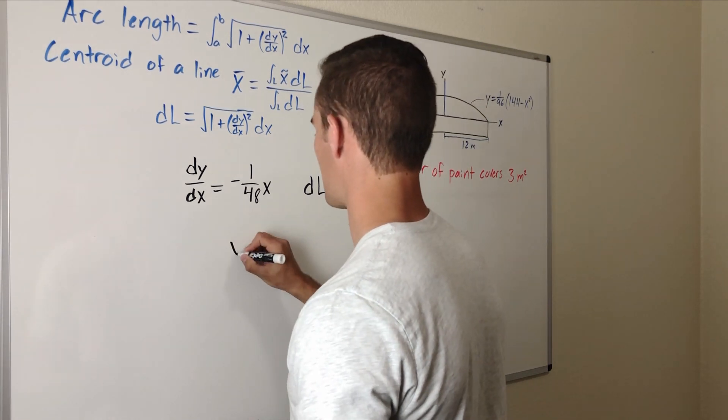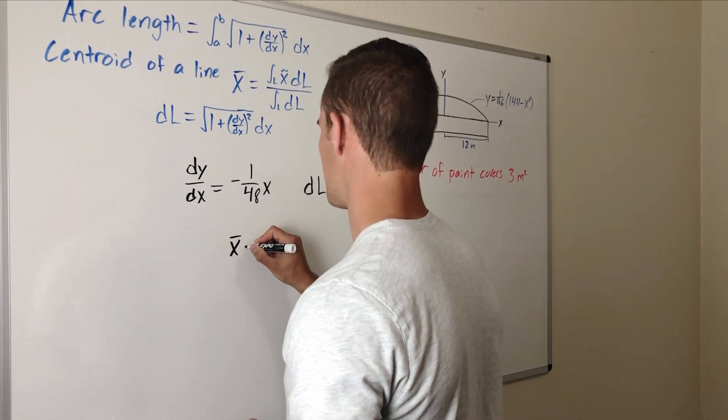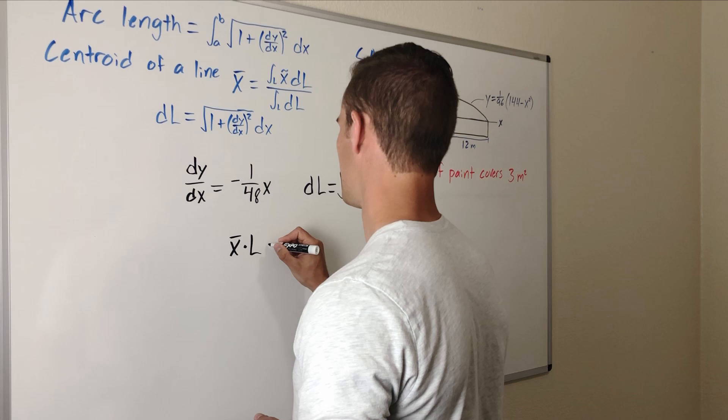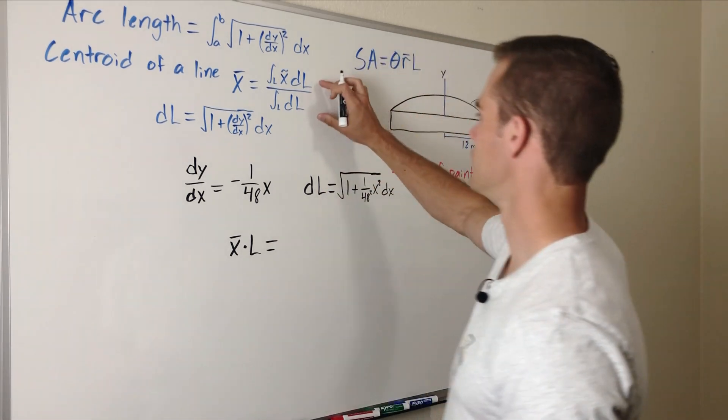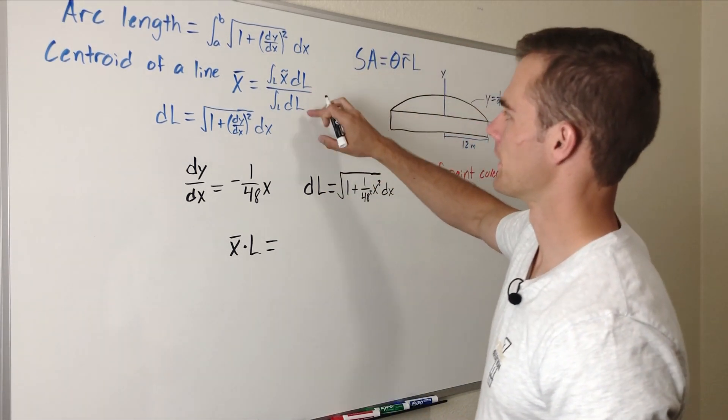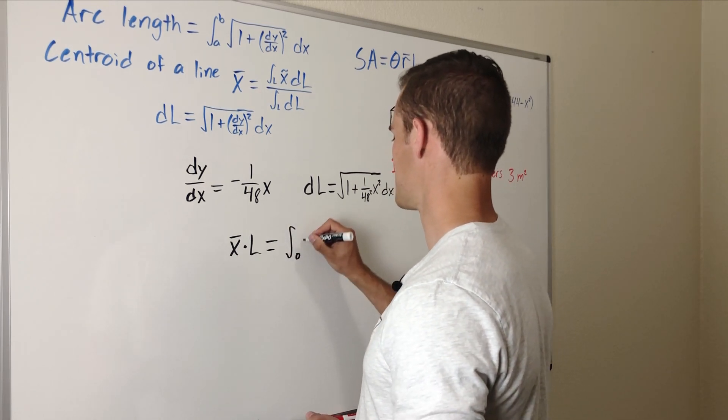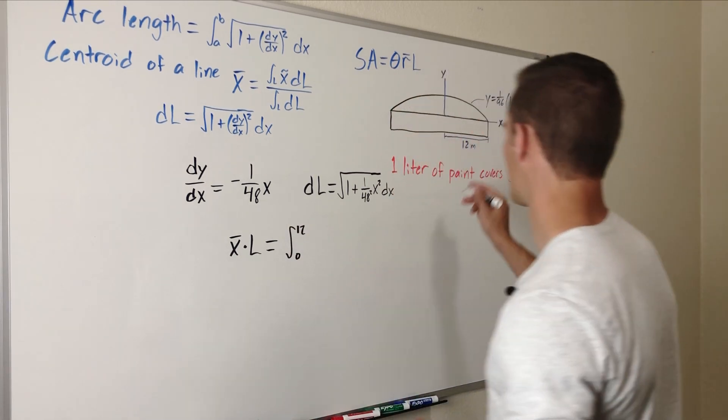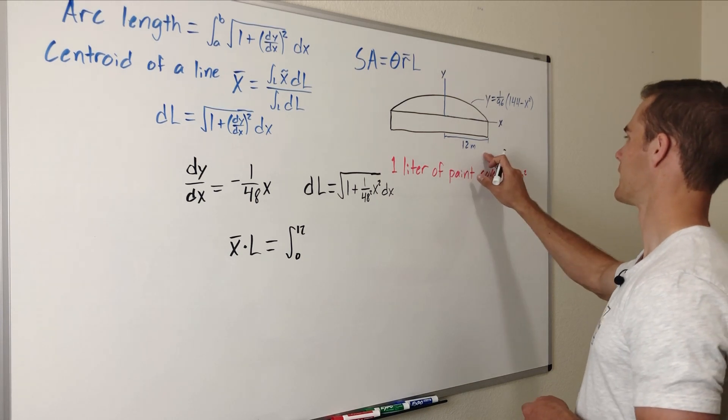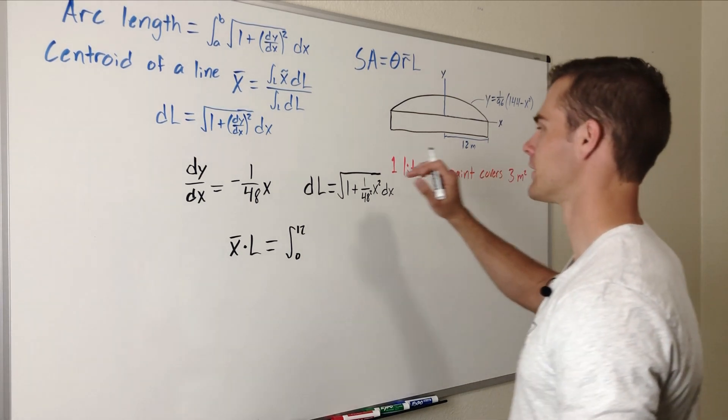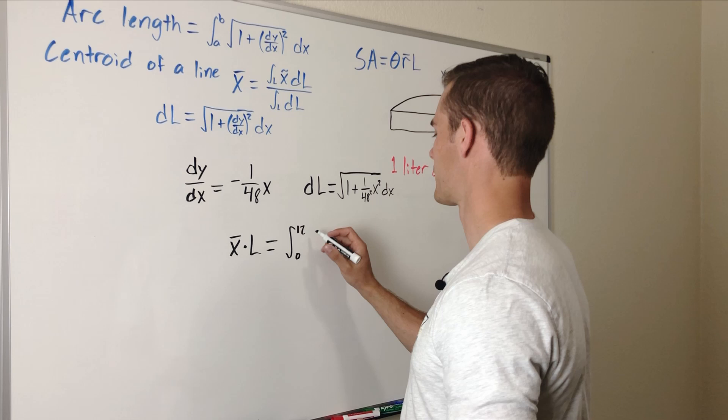So our x bar multiplied by our L is just going to equal the numerator of this fraction. So that's just going to be the integral from 0 to 12 because our roof has a radius of 12 meters.